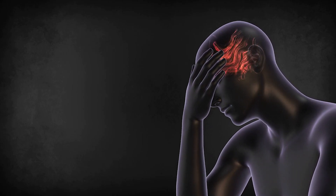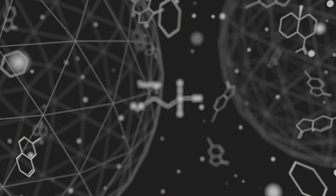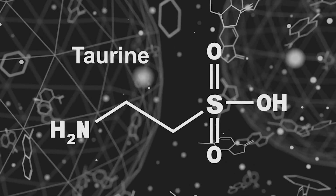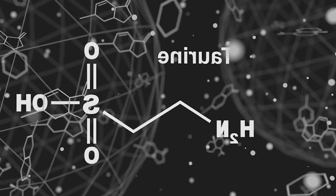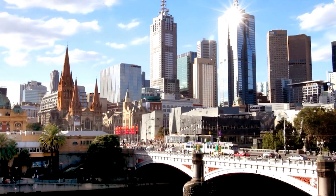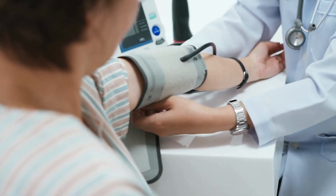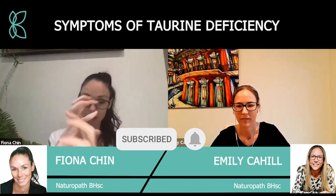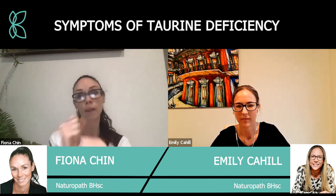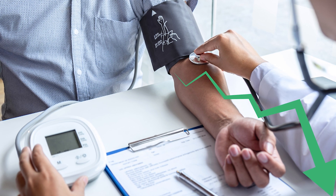Having high blood pressure creates a whole feedback loop, and that's where taurine is really amazing — it down-regulates the renal afferent sympathetic tone. When we get stressed, we pump out more epinephrine and norepinephrine, which cause vasoconstriction in the endothelial tissue, raising blood pressure. What taurine does is reduce that sympathetic tone, relaxing the endothelial tissue, causing vasodilation, and helping to lower blood pressure.